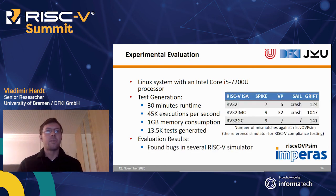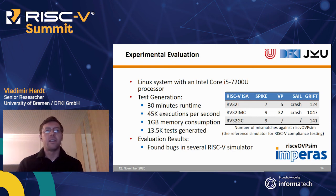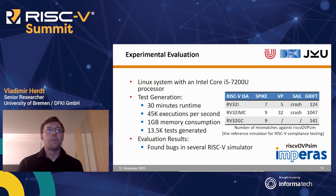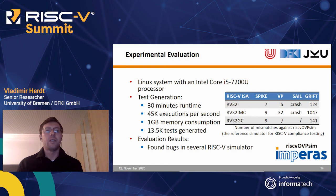As reference simulator, we used RISC-V OVP-SIM from Imperas, which is a highly configurable simulator providing comprehensive support for RISC-V and is used as the reference simulator for compliance testing. This table summarizes our evaluation results. We considered four RISC-V simulators — Spike, our ISS, SAIL, and GRIF — with three different RISC-V ISA configurations: the base integer ISA, with M and C extensions, and with all standard extensions. The table reports the number of mismatches observed against RISC-V OVP-SIM. As a result, we found bugs in several RISC-V simulators.